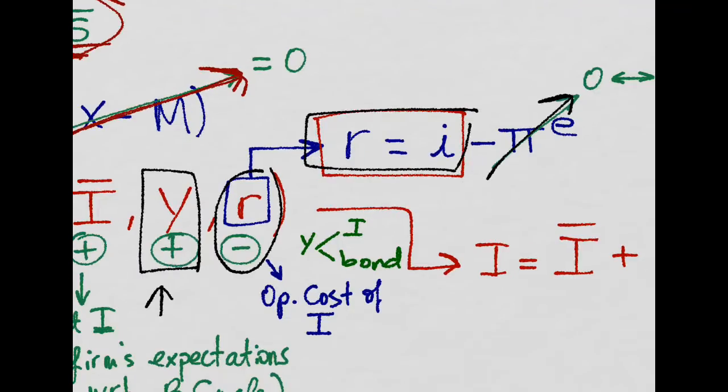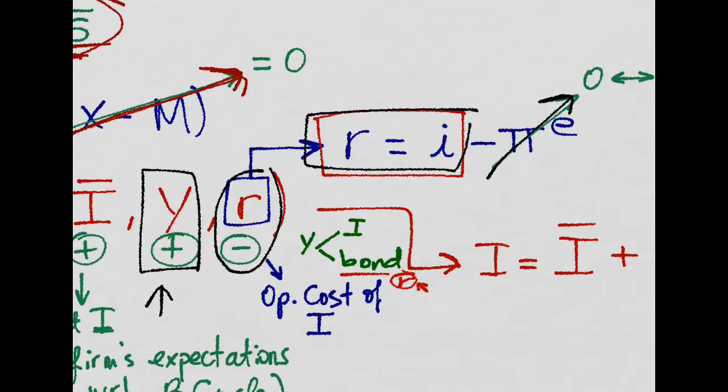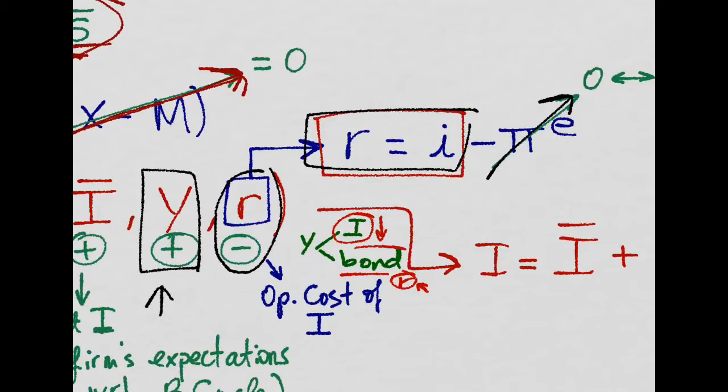So if firms have to decide to use their income between physical capital and bonds, they will use the rate of return of bonds, the real interest rate, as a reference. If this rate of return is high, bonds are more profitable, and the opportunity cost of investing is too high. So this will diminish investment and firms will just go to buy bonds.